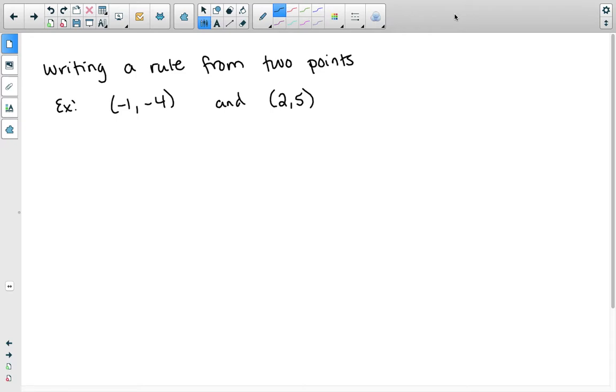This video is on writing a rule from two points. We're going to write a rule given two coordinates. The first step is to find the slope because we want to put it into slope-intercept form.